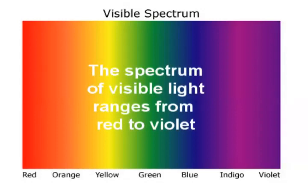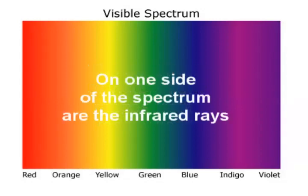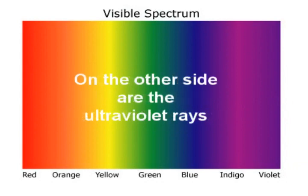And what are the others? The spectrum of visible light ranges from red to violet. On one side of the spectrum are the infrared rays. On the other side are the ultraviolet rays.